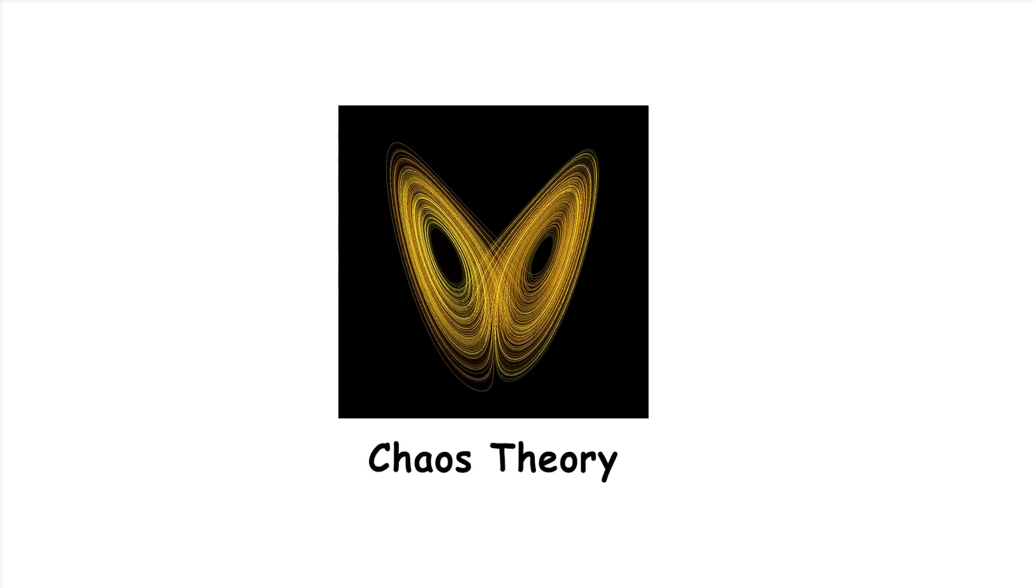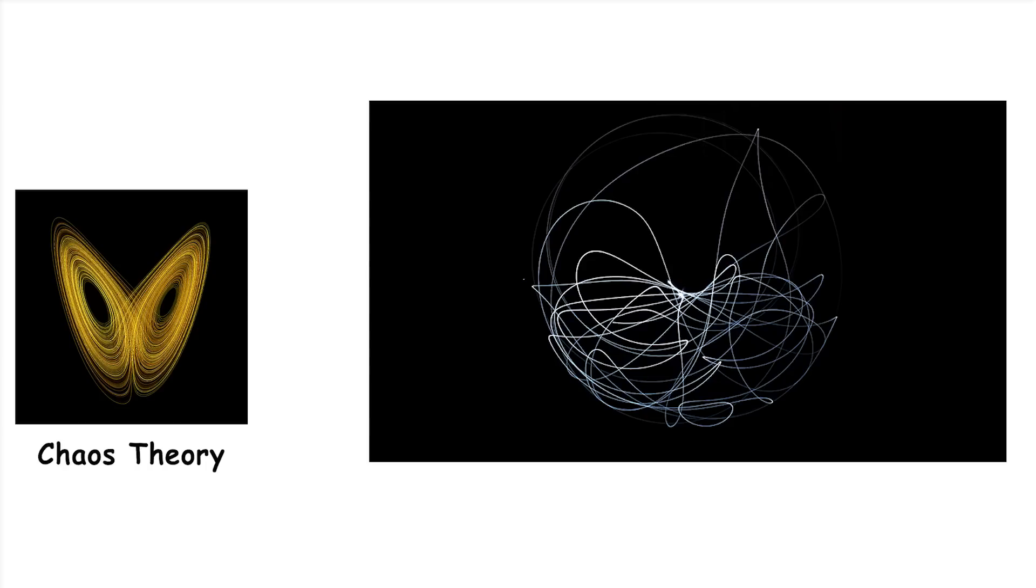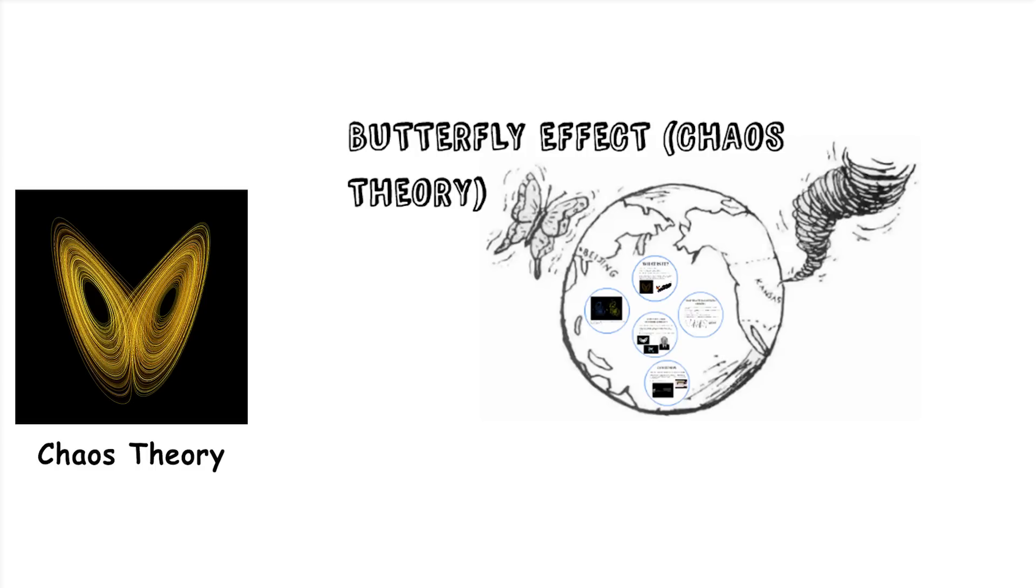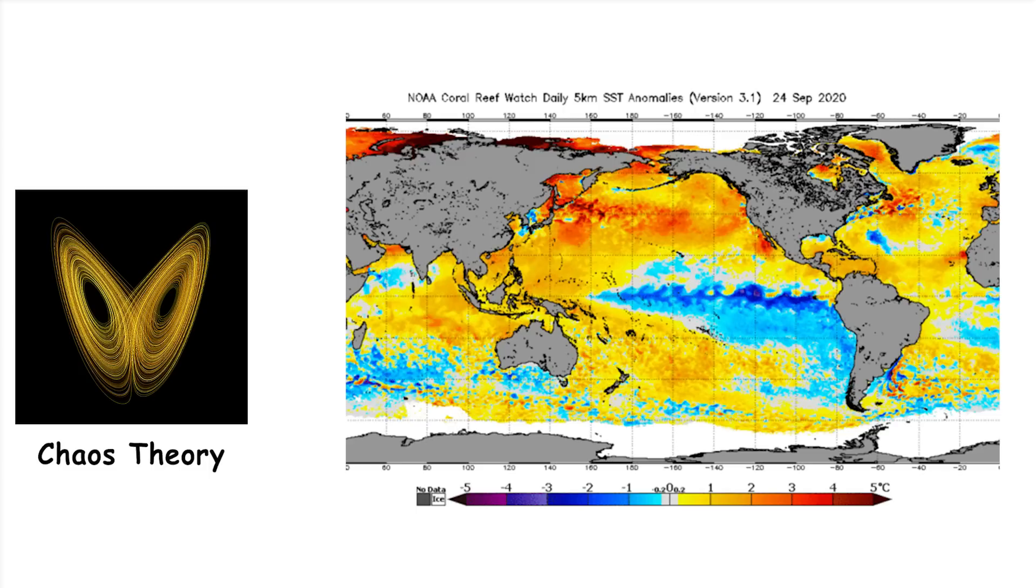Chaos theory. Chaos theory studies how small changes in the initial conditions of a system can lead to vastly different outcomes. This is known as the butterfly effect, where a tiny change, like a butterfly flapping its wings, can eventually cause a significant event, like a tornado. Think about predicting the weather. A tiny change in temperature or wind speed can make weather forecasts very difficult. Chaos theory helps us understand these unpredictable systems and why they behave so erratically.